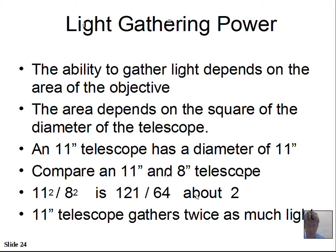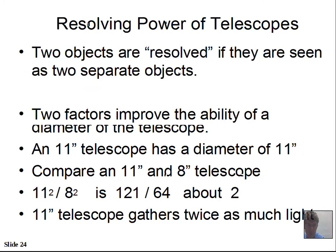To compare light-gathering power, you need the two diameters. Square each number and divide — that gives you the ratio of the light-gathering power. Take each objective diameter, square those numbers, divide them, and you will have learned how much more light one telescope gathers than another.